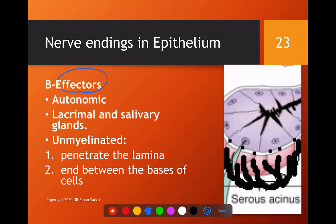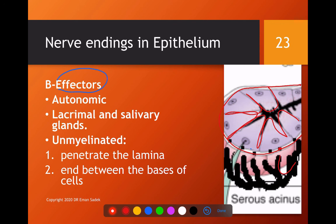The effectors in the epithelium are related to the autonomic nervous system. The nerve reaches the gland — which is formed of secretory cells with a basement membrane — as unmyelinated non-capsulated fibers. They pierce the basement membrane to reach the base of the cells and give them the order to produce secretion that passes through the gland's ducts. Examples include the lacrimal gland and salivary glands.